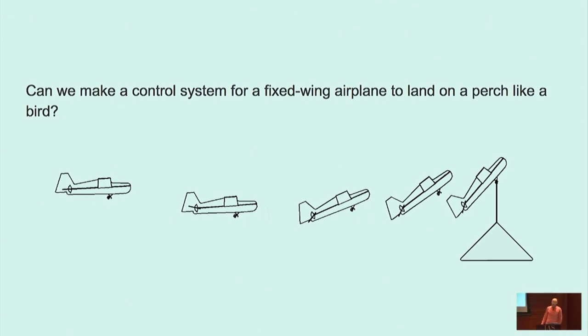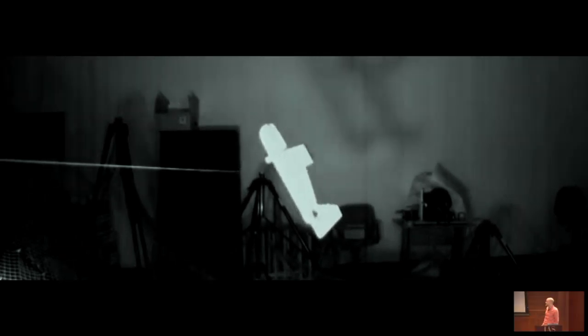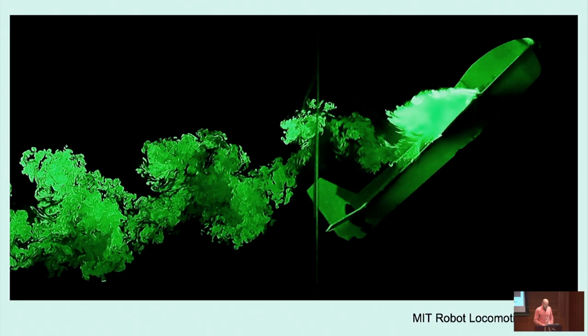We asked the question of could we take an airplane and make it land on a perch like a bird. The reason we thought we needed RL is because when you go to do this, the aerodynamics on the wing become extremely complicated. The post-stall aerodynamics get very complicated. This is a high-speed video of the airplane slowed down, landing on a perch in the lab.